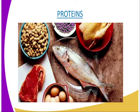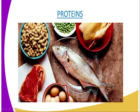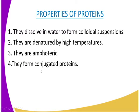We are now going to look at different proteins from the diagram. There are different proteins shown: there is fish, eggs, green grains, chicken, and liver. Those are some sources of proteins which are being represented diagrammatically.